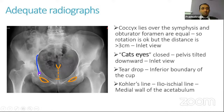The first important landmark is the teardrop, which marks the inferior boundary of cup placement, and the Köhler's line — the ilio-ischial line — which marks the medial-most aspect of the bony acetabulum.